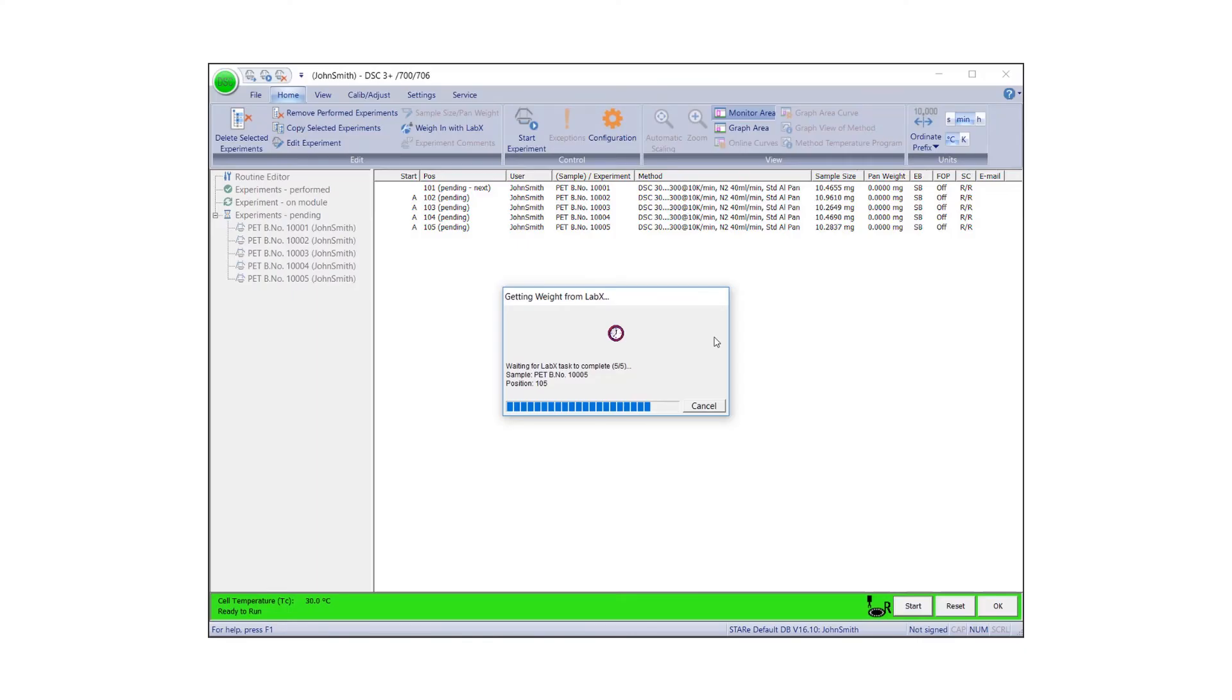Now, individual weight values are displayed in the experiment buffer. These appear under Sample Size, as shown here.